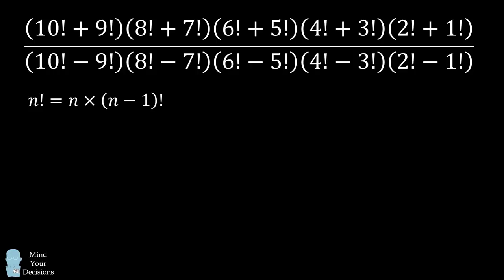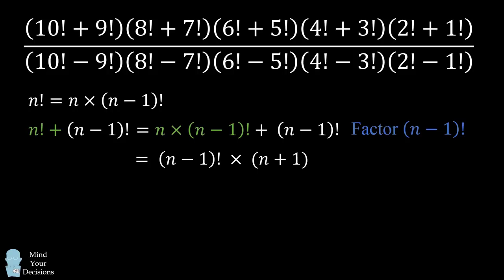A general term in the numerator is n factorial plus n minus 1 factorial. We'll rewrite n factorial in terms of its recursive form, and now we have n minus 1 factorial being common to both terms. So we can factor out n minus 1 factorial to get that n factorial plus n minus 1 factorial is equal to n minus 1 factorial times the quantity n plus 1.